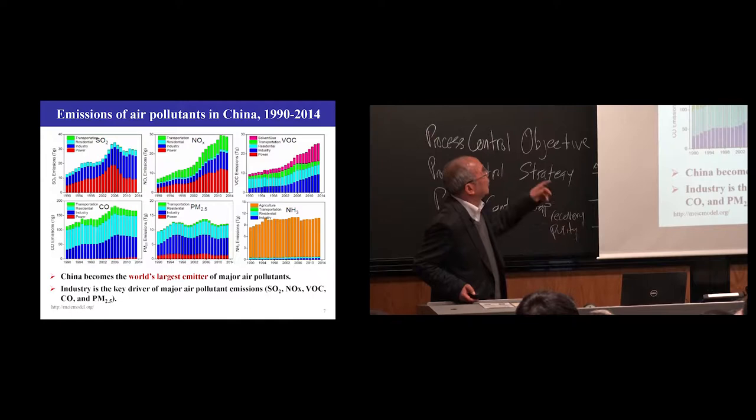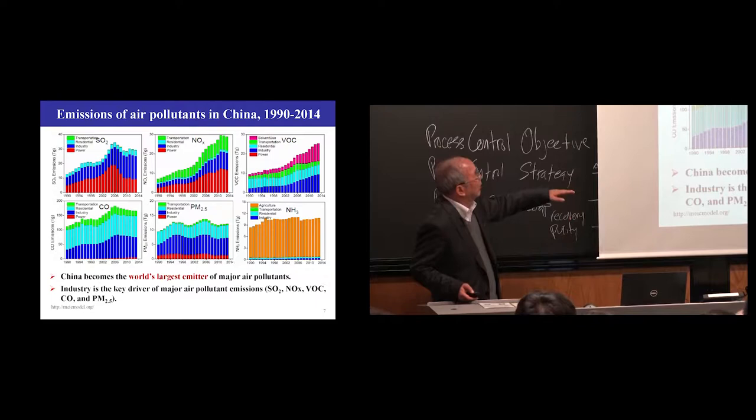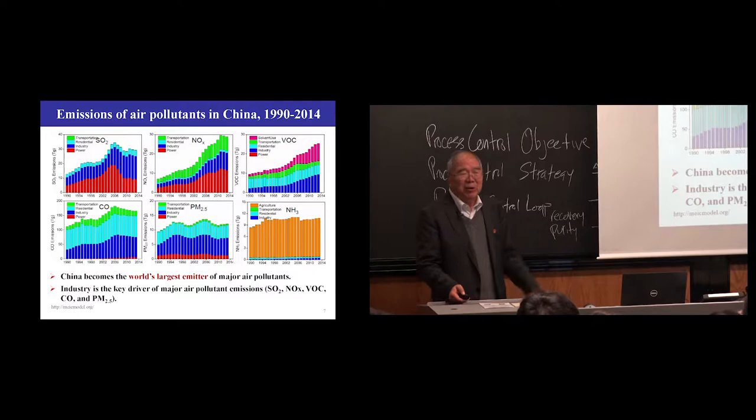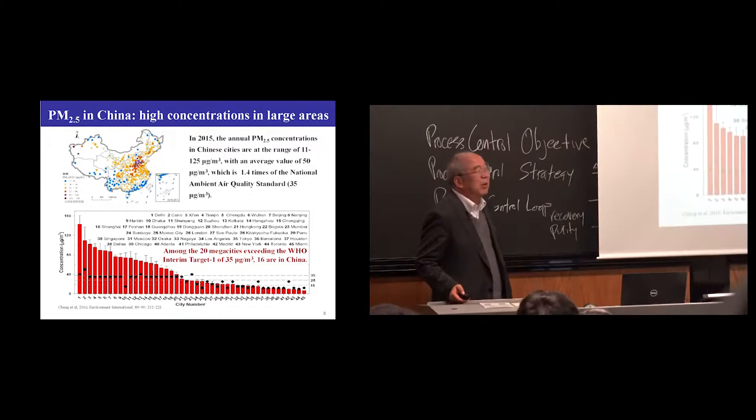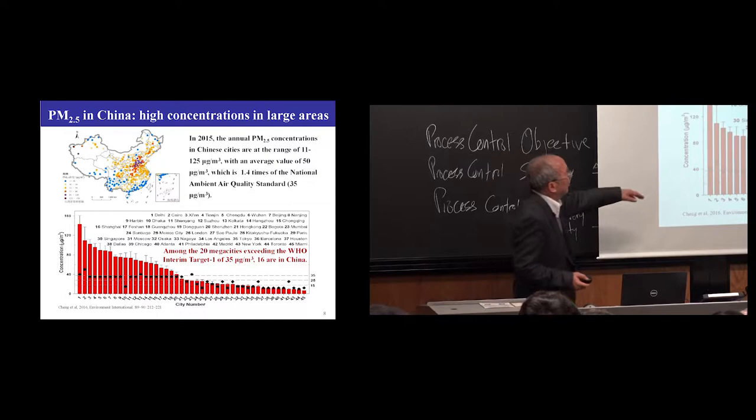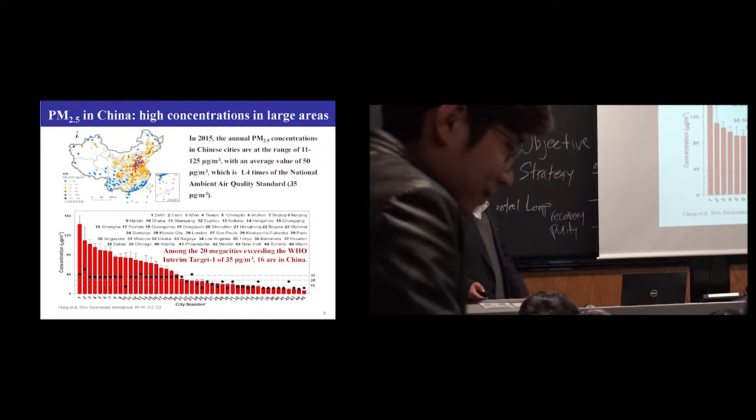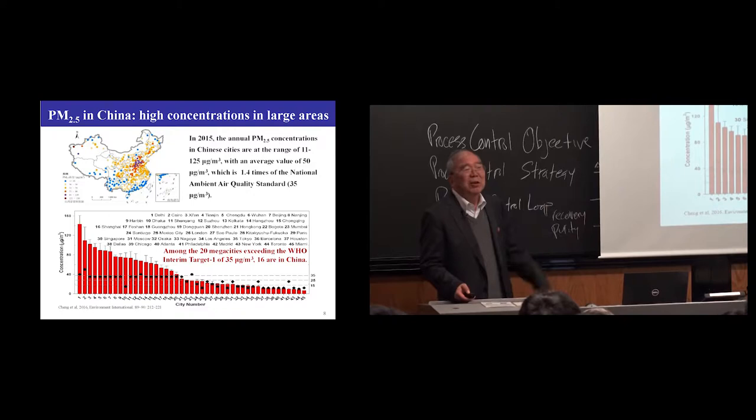Because of coal use, urbanization, and mobile vehicles, there's big pressure for environmental protection. Since 1990 to 2015, for every pollutant, China became the largest emitter in the world. Not only for one or two pollutants, but for almost all the pollutants. If we add CO2 for greenhouse gases, also the largest emitter.